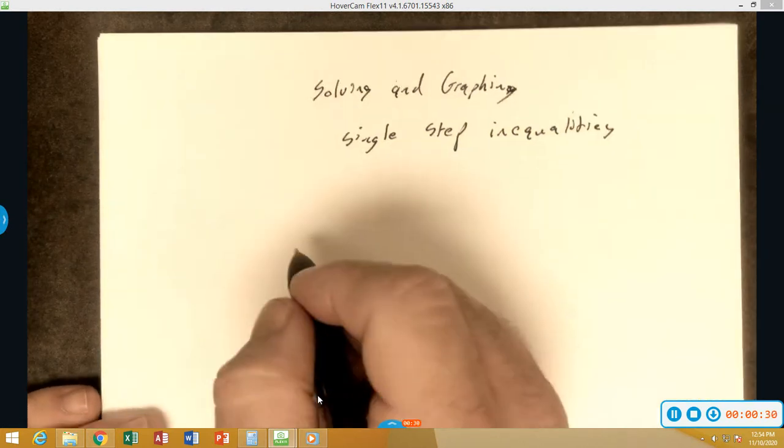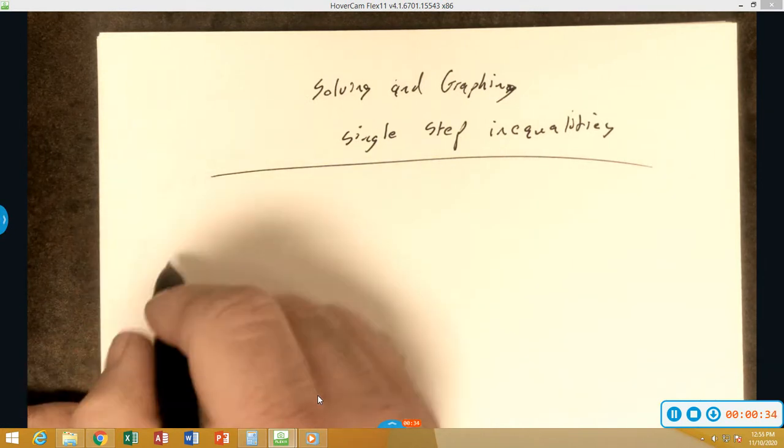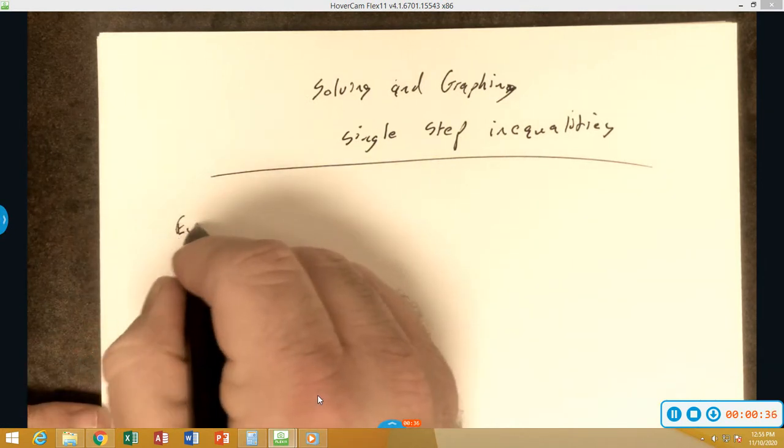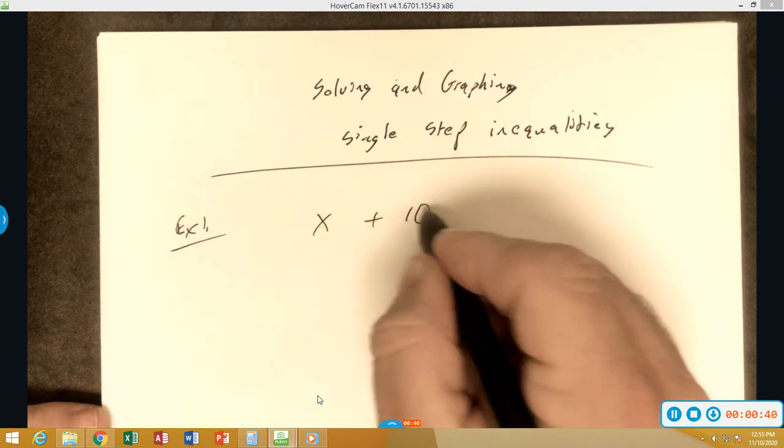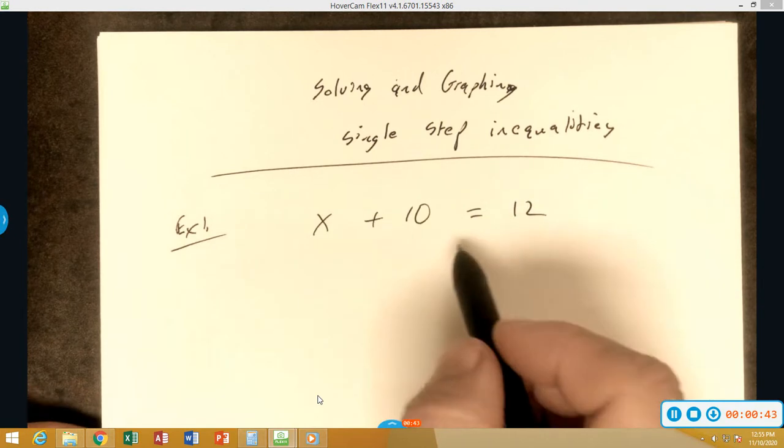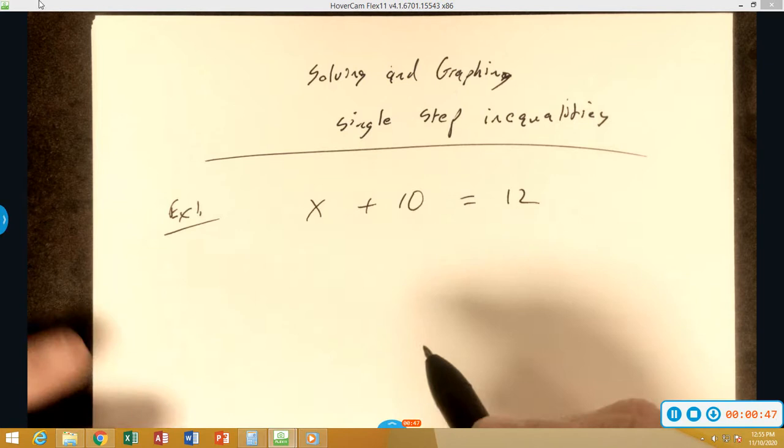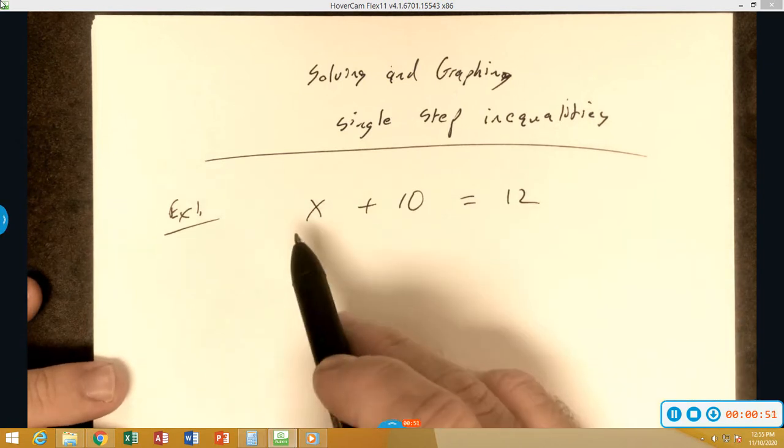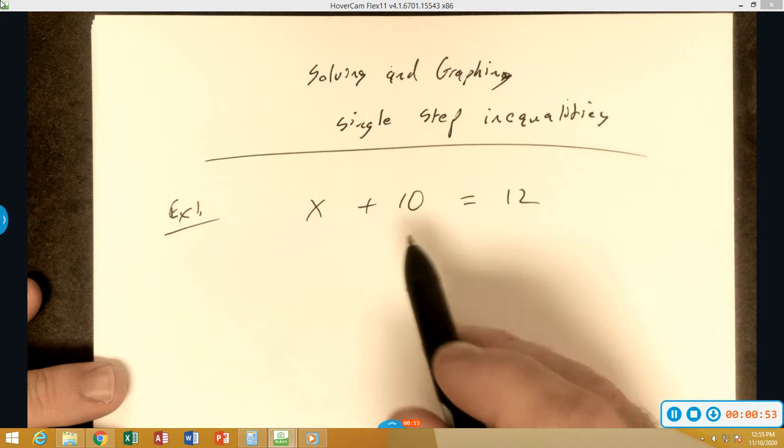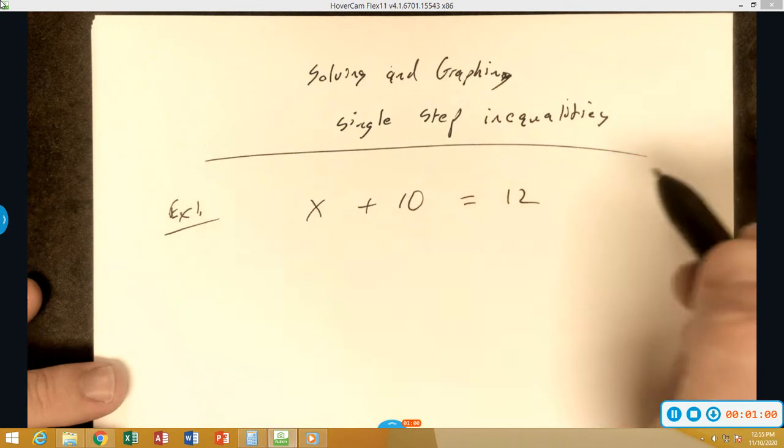Now, let's remember back when we did equations, what happened if we had a problem like this? x + 10 = 12. Now, we can easily understand that the answer here is 2, but let's go through the process because remember we talked about single step inequalities. We need to know how to do them to get the two step and then we needed two step to get the multi-step and so on and so forth. So, let's get the basics first.